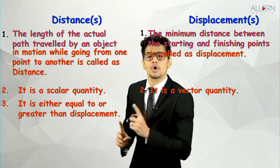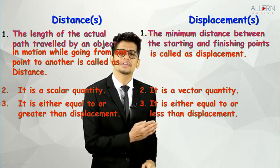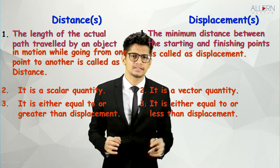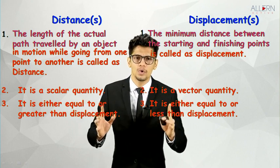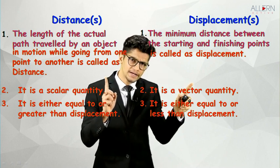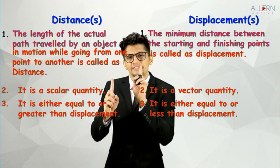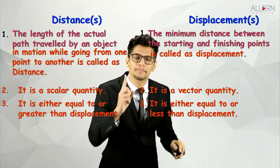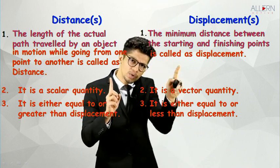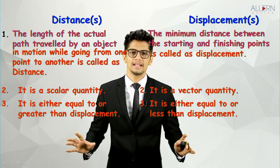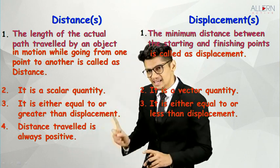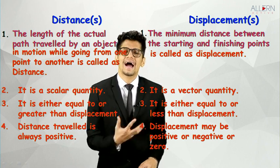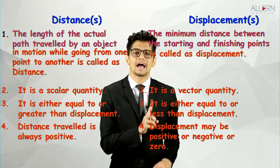The third point: distance is either equal to or greater than displacement. We saw in the train example that the curved distance was greater than the straight-line displacement. If the train traveled in a straight line, distance and displacement would be equal. So distance is always equal to or greater than displacement. Also, distance traveled is always positive, whereas displacement may be positive, negative, or zero, since it is a vector quantity and vector quantities have directions.